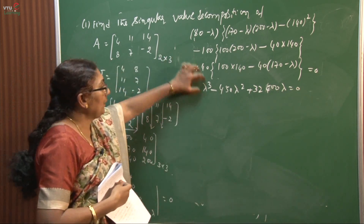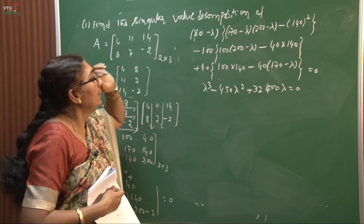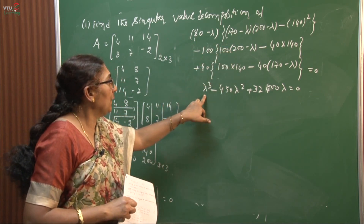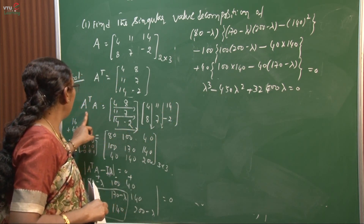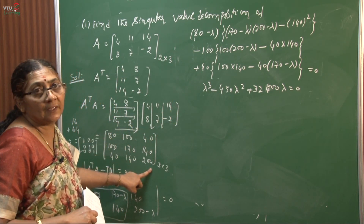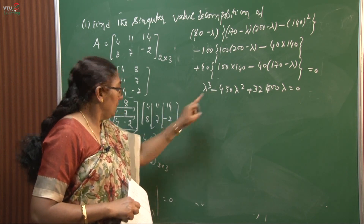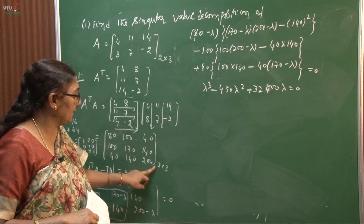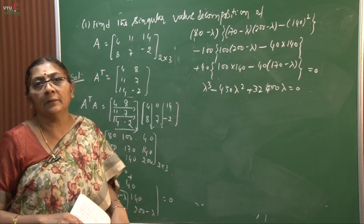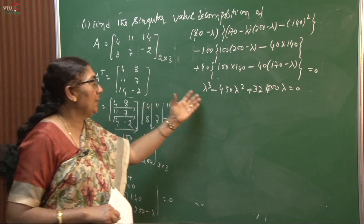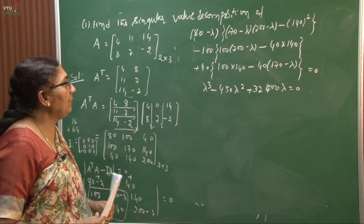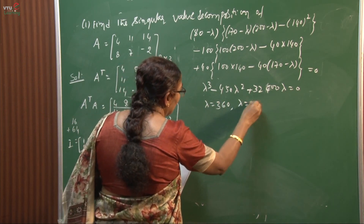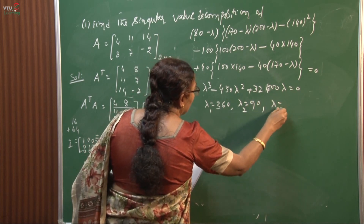This is the expected cubic polynomial — the order of the polynomial matches the order of A^T A, which is 3 cross 3. Solving this cubic equation, we get the eigenvalues: lambda = 360, lambda = 90, and lambda = 0. Keep in mind to arrange them in decreasing order: 360, 90, and 0.